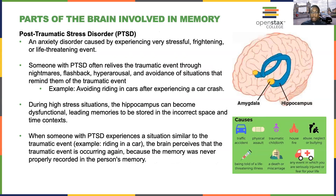Another interesting application of what we know about the amygdala and the hippocampus is the study of PTSD — post-traumatic stress disorder. It's an anxiety disorder caused by experiencing very stressful, life-threatening, or traumatic events. Someone with PTSD often relives the traumatic event through nightmares, flashbacks, hyperarousal, as well as avoiding situations that remind them of the event. For example, someone who experiences a very scary car crash may experience flashbacks when riding in cars.